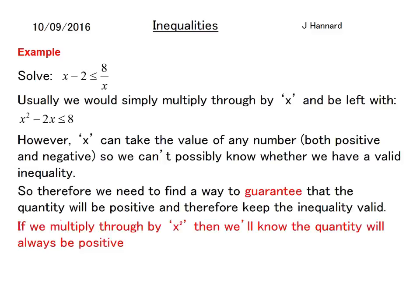If we multiply through by an x squared, then we'll know that the quantity will always be positive because everything on this earth squares to be positive. So it doesn't matter if it's minus 10, minus 150, or 273. If you square it, it's going to be positive. So we multiply by the square of the denominator. And if there's two denominators, we'll multiply through by the square of both denominators.